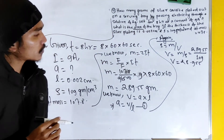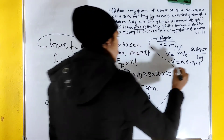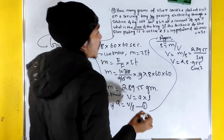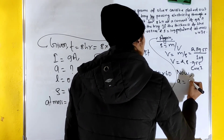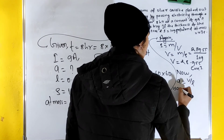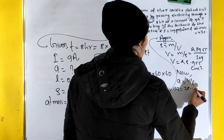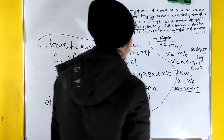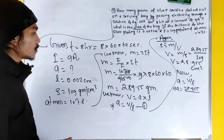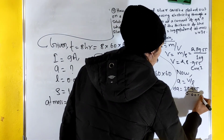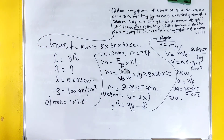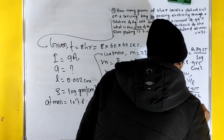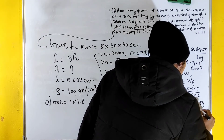Volume is 28.955 centimeter cube. Area equals V divided by L, so area equals 28.955 divided by 0.002, which gives the answer as 14477.59 centimeter square.